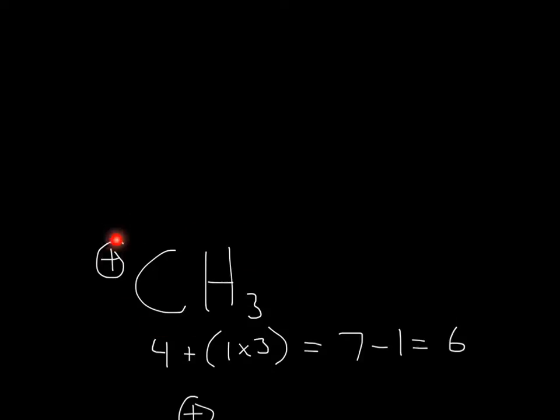So for CH3+, all I did was just write the valence electrons for each of these. For example, a carbon has 4, a hydrogen has 1 valence electron, and then since there's 3 hydrogens, multiply that by 3, so you'll get 7.